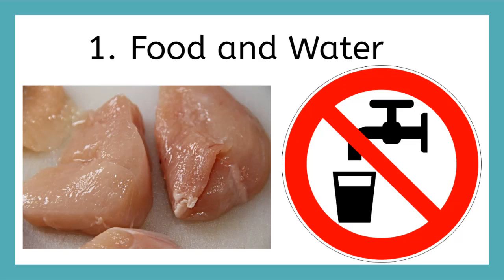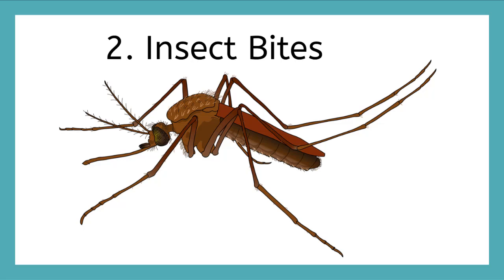The second way that germs travel is through insect bites. Some insects, like mosquitoes, carry pathogens that pass to humans when they bite. You've probably heard of malaria. It is passed from mosquitoes to humans and makes humans very sick.